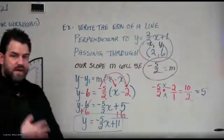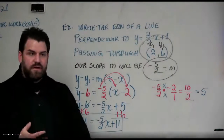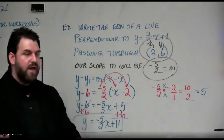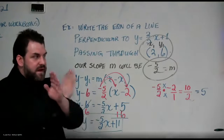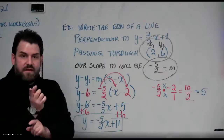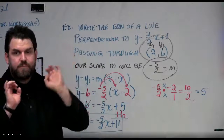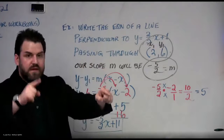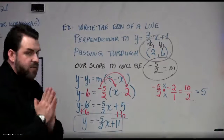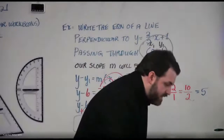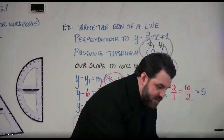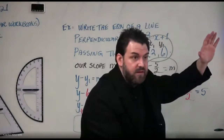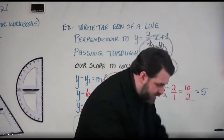Just to recap what we learned today: parallel lines have the same slope as each other — they never cross. Perpendicular lines cross at negative reciprocal slopes, and the two steps to get that are: flip it and change the sign. Everybody, very good job. I'm very proud of you and all your hard work. It means a lot to me that you all paid attention. I hope you learned something today.